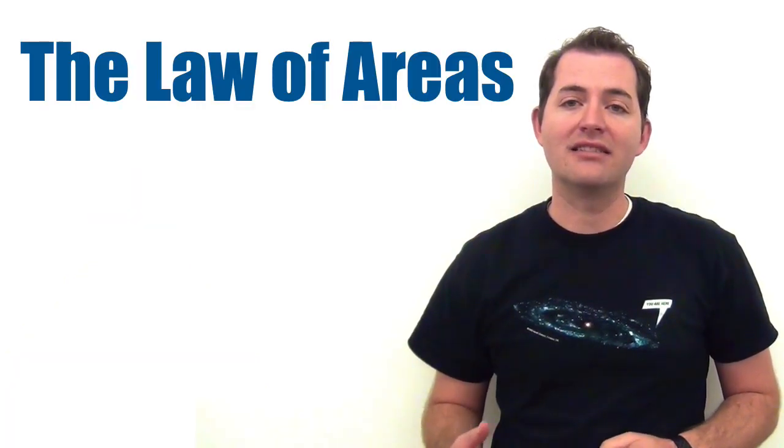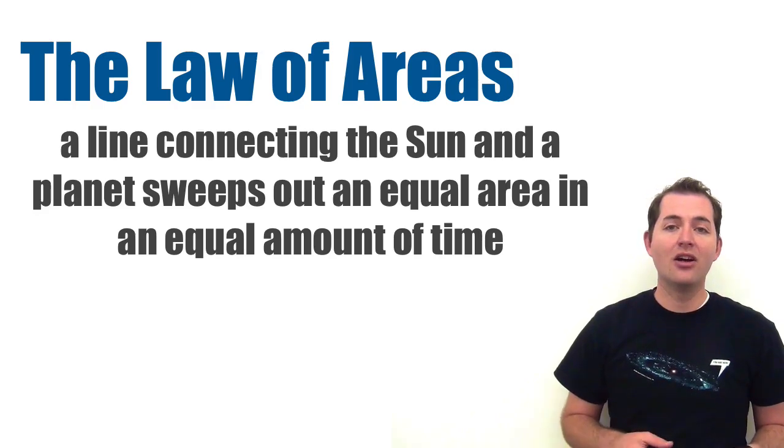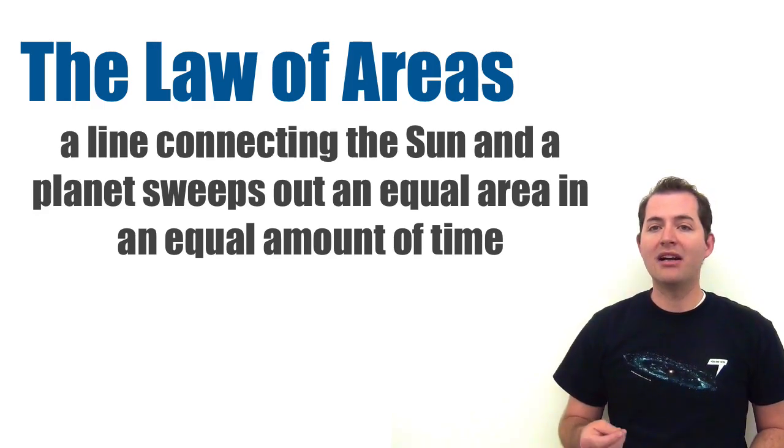Kepler's next law is the law of areas. Kepler's Law of Areas says that a line connecting the sun and the planet would sweep out equal areas in an equal amount of time.